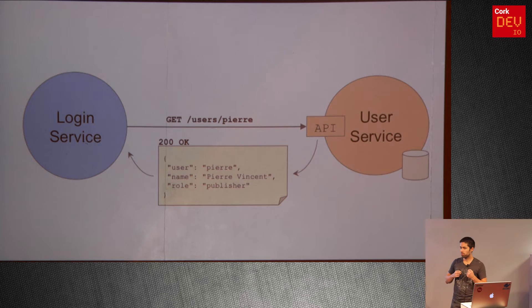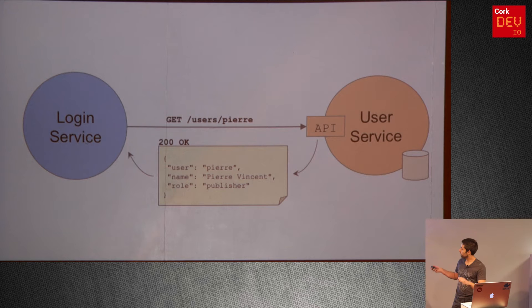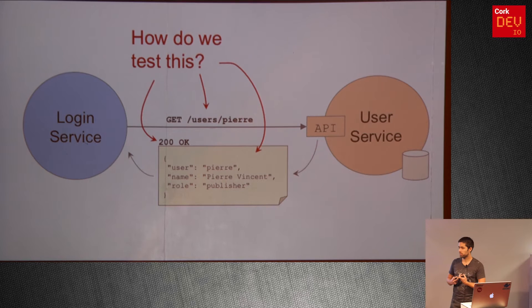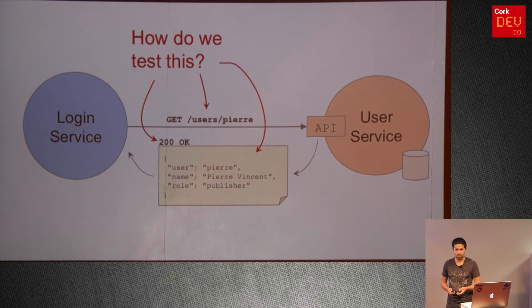Looking back at the monolith, this might just be an interface call returning a user class — a plain Java object with username, name, and role fields as strings. If we change any of that, the compiler gives out. Now that we've decoupled this interaction, how do we test it? How do we test that this endpoint actually exists and doesn't change? How do we test that the response code is what we expect? And how do we test that the payload is what we wanted?